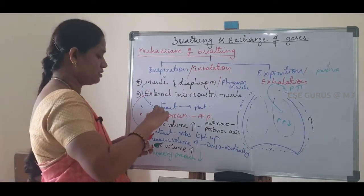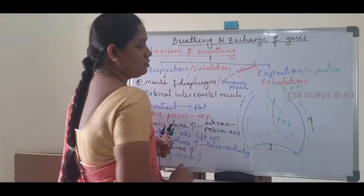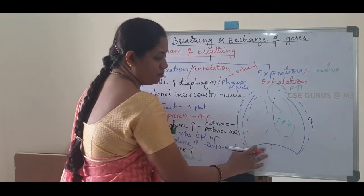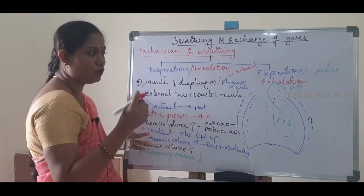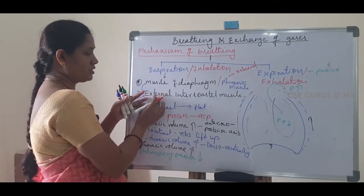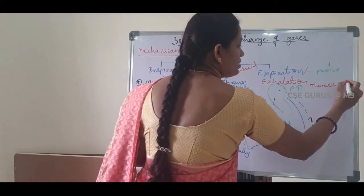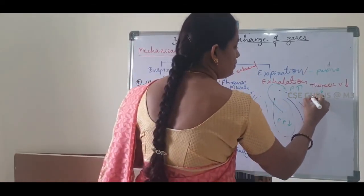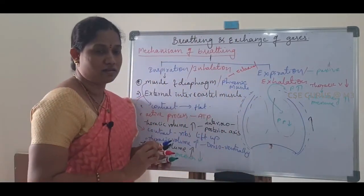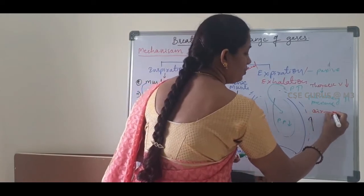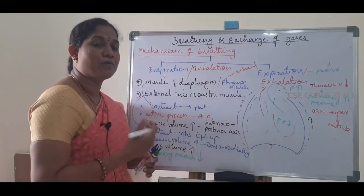In expiration, first the diaphragm muscles get relaxed, so the diaphragm returns to its original dome shape, decreasing the thoracic volume. Then the external intercostal muscles also relax, further decreasing the thoracic volume. As a result, the pulmonary pressure increases, and air moves outside. This process is called expiration.